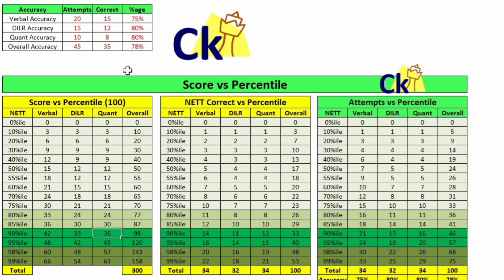The overall score is 98 to 100 marks. Now to get 42 questions right, if I divide by 3, I need to do 14 questions correct — so 14 correct, 11 correct, 12 correct. This is the ideal scenario. But my accuracy is different. I can't do all 14 attempts all right. I have to attempt more to get that score right.